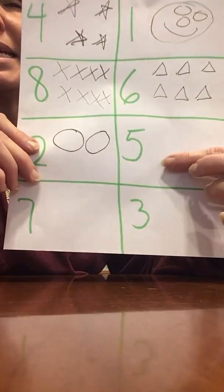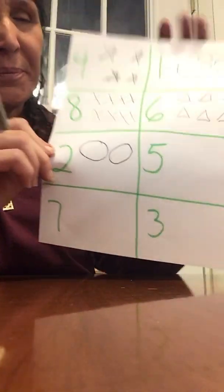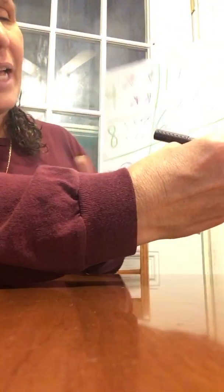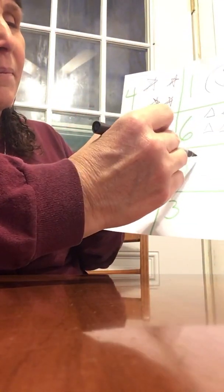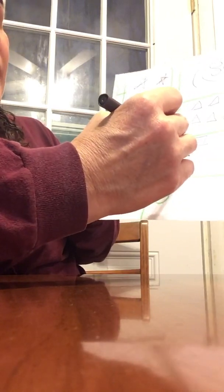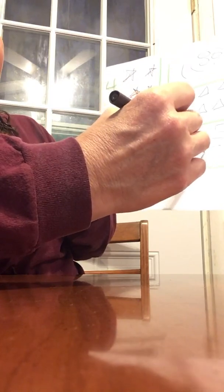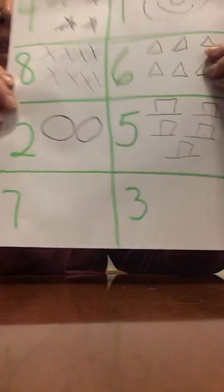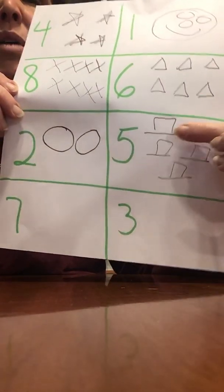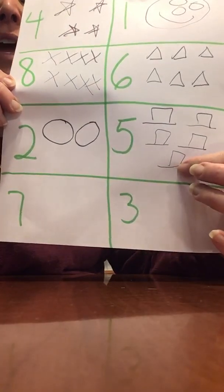What number is this? It is the number five. We're going to draw five hats. Remember, I don't draw as well as you do. One, two, three, four, five. Five hats. One, two, three, four, five.